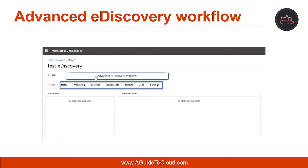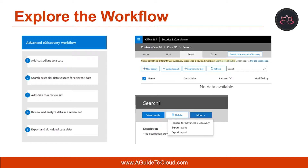Let's have a look at the Advanced eDiscovery workflow. This is an example screenshot showing the home tab of an Advanced eDiscovery case. Looking at the sample workflow that aligns with common eDiscovery practices, the first step after creating a case is to add custodians. A custodian is a person having administrative control of a document or electronic file that may be relevant to the case.